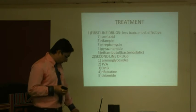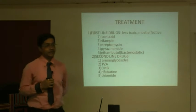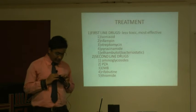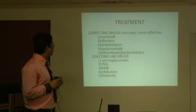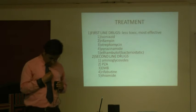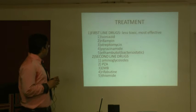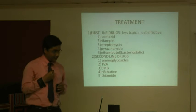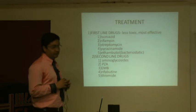Regarding the treatment of tuberculosis, there are two types of drugs available under DOT therapy — Directly Observed Treatment, Short Course — according to the Revised National Tuberculosis Control Program, a WHO initiative to eradicate tuberculosis. The first-line drugs are less toxic and most effective. They include isoniazid, which is the most potent drug, rifampicin, and streptomycin, which comes in injectable form.